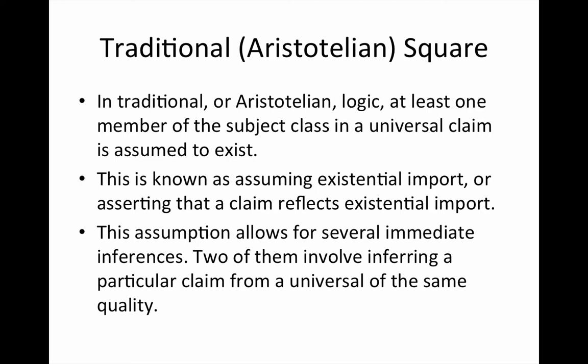A particular claim says there is some S — there is some class that has at least one S member — and that S member is also a member of the P class, or it is not. So when we assume existential import, a number of valid immediate inferences result.